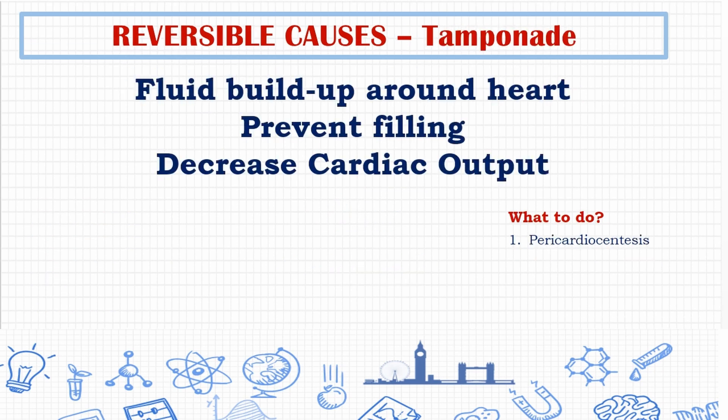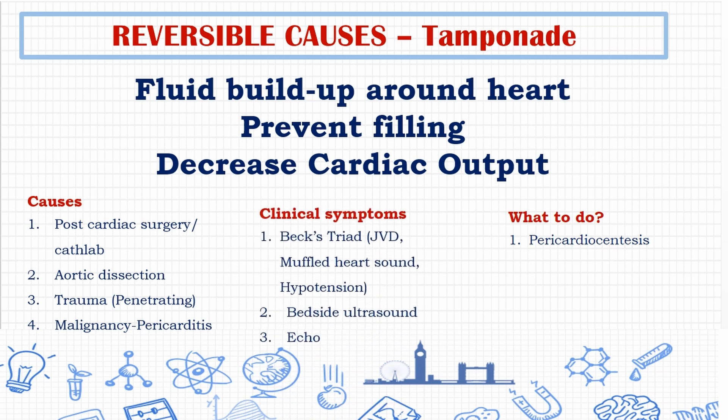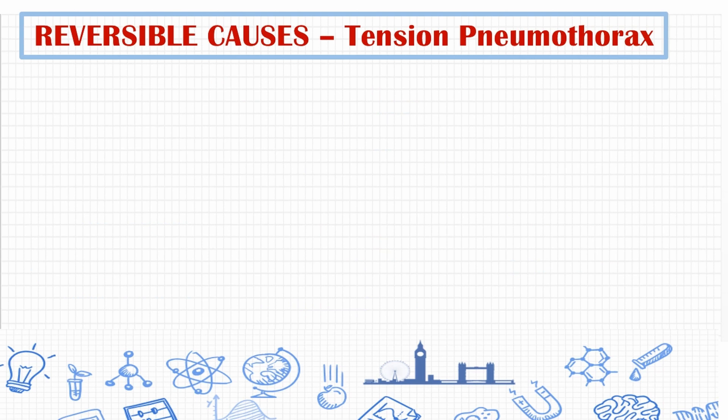The next T is tamponade — fluid buildup around the heart — which can lead to decreased ventricular filling and decreased cardiac output. Causes include post-cardiac surgery, aortic dissection, trauma, and pericarditis. Clinical symptoms include Beck's triad: jugular vein distension, muffled heart sounds, and hypotension. Clinical findings can be confirmed with bedside ultrasound and echocardiography. Management includes pericardiocentesis and thoracotomy.